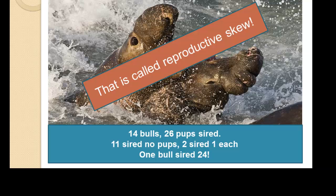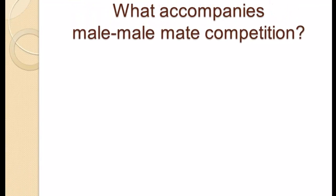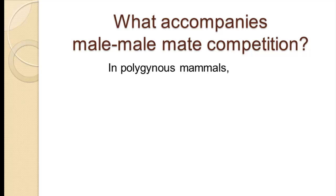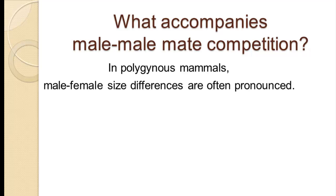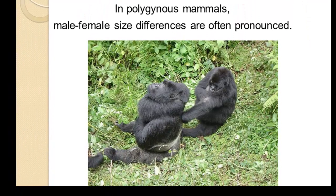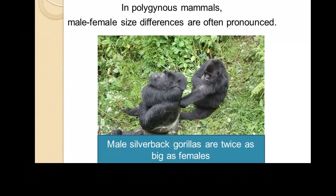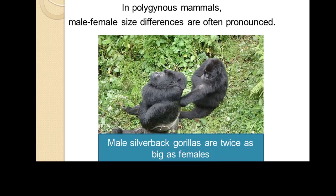That is a tremendous example of what's called reproductive skew — when reproductive success isn't evenly distributed over a population but some individuals have more than their share. A variety of things can accompany male-male mate competition, and one thing we often find in polygynous mammals is sexual dimorphism in size. Male-female size differences often become more pronounced if males are monopolizing numbers of females, as with silverback gorillas, who are twice as big as females.